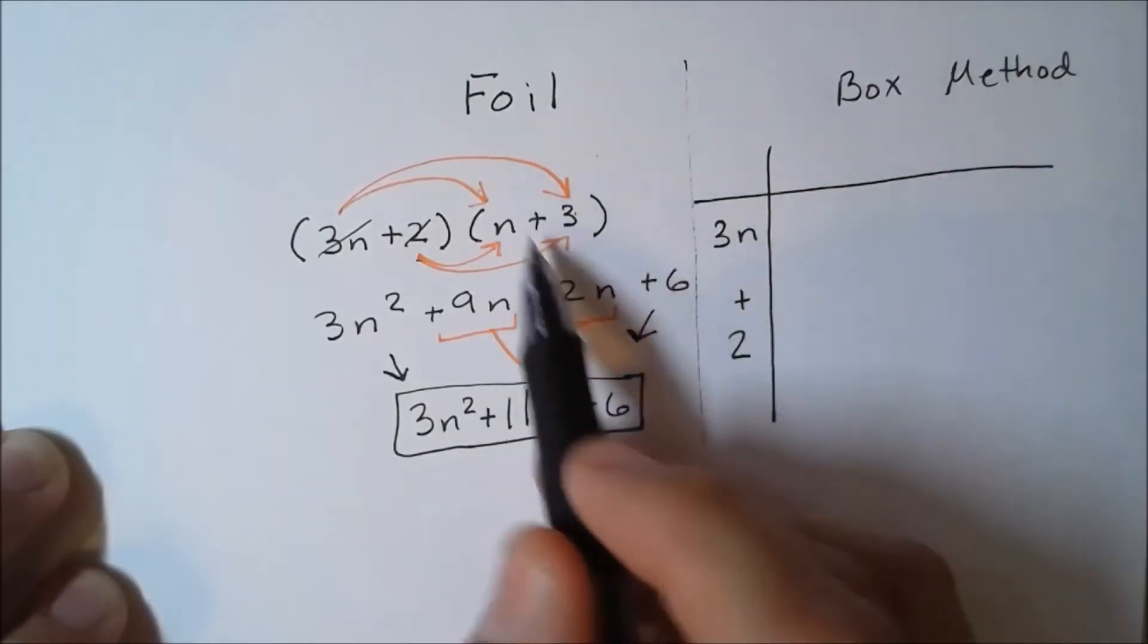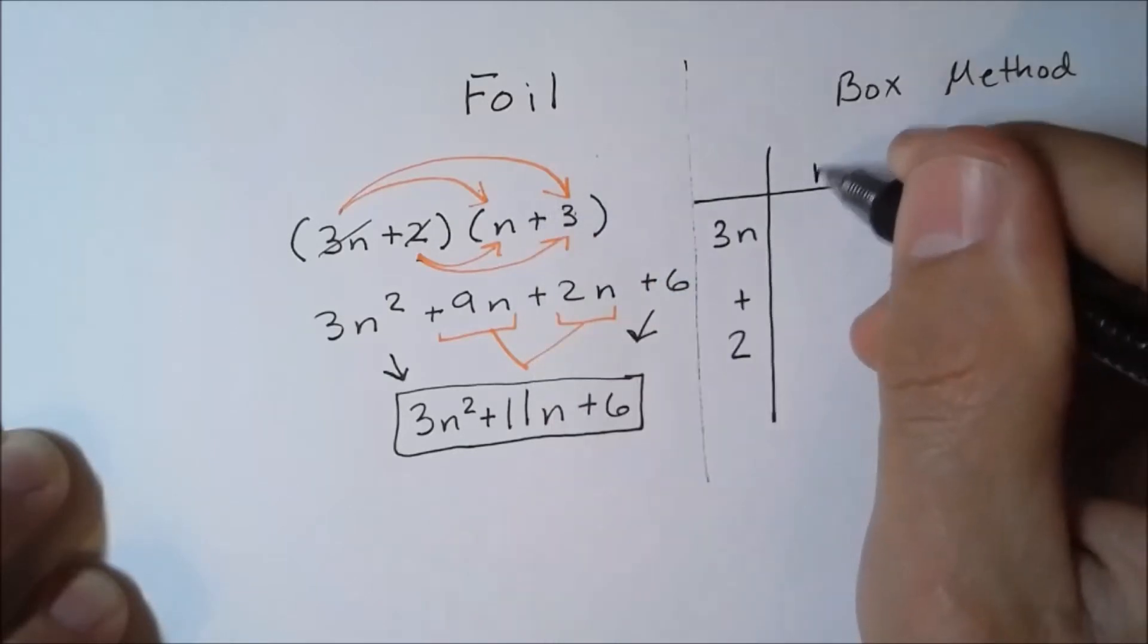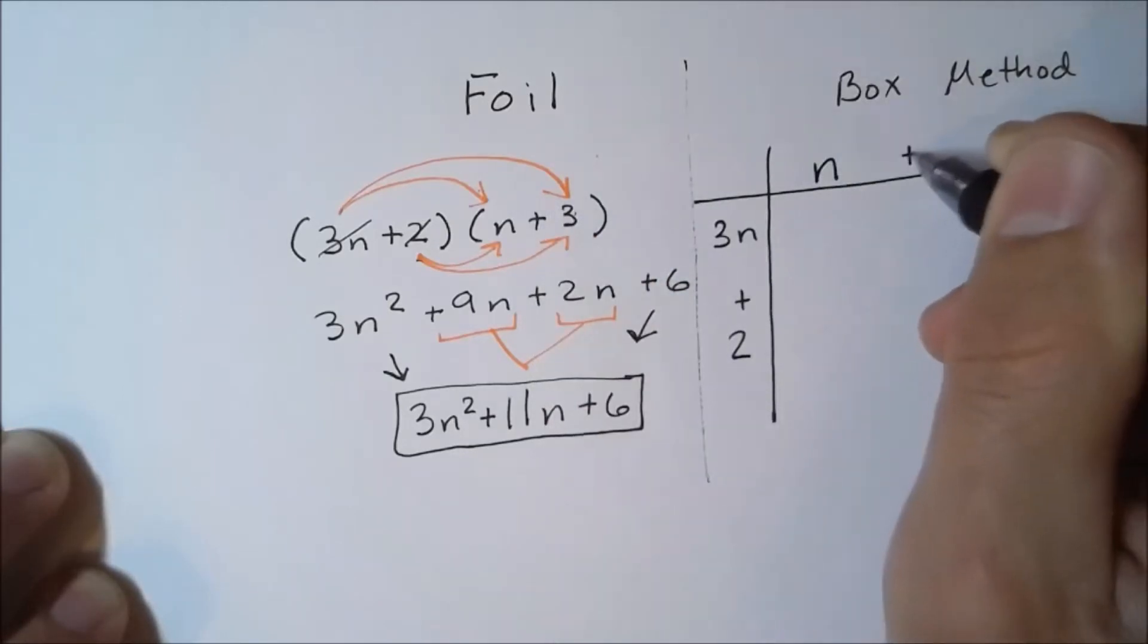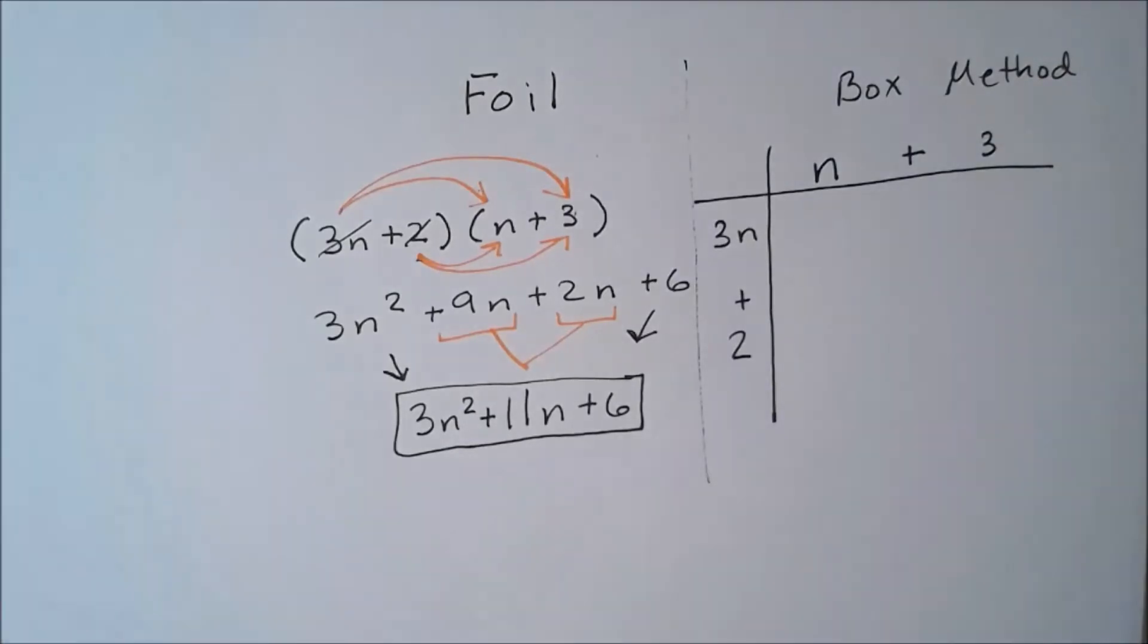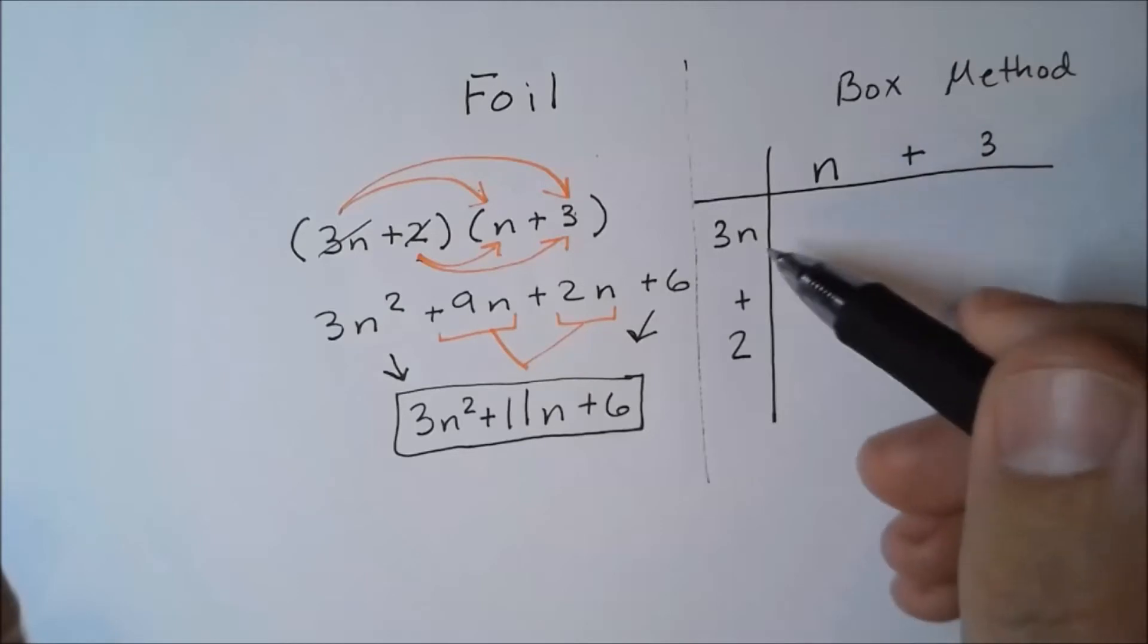Then we're going to go to our next binomial and put our first term in the front and our last term in the back. Now what we're going to do is multiply our terms.